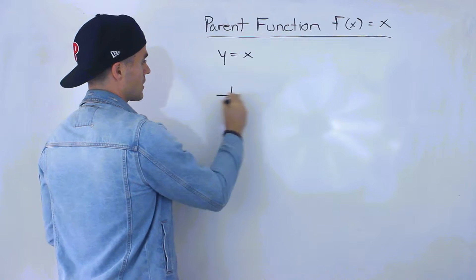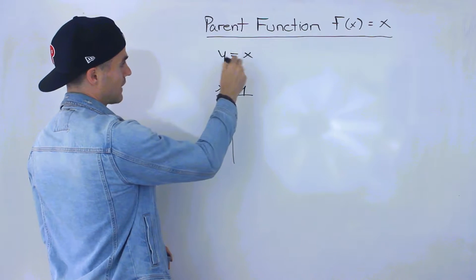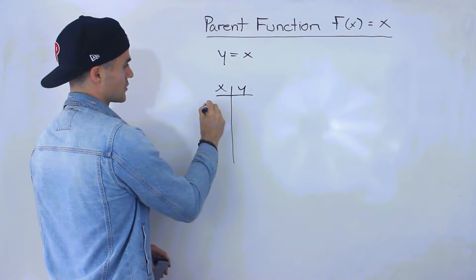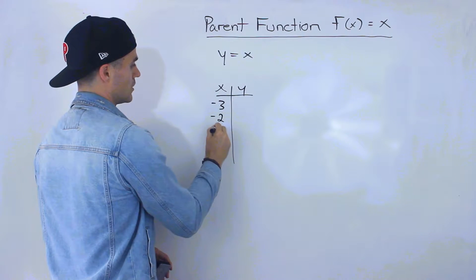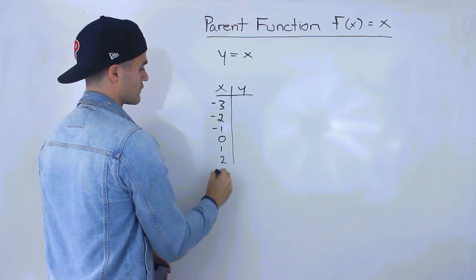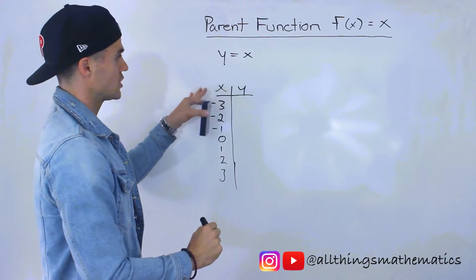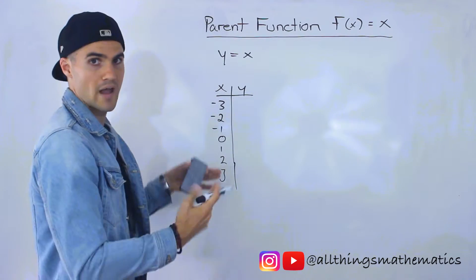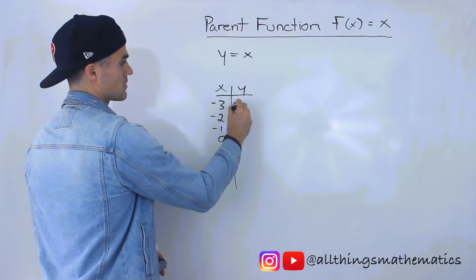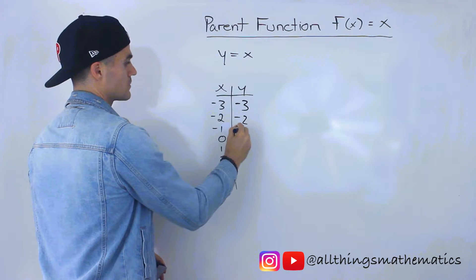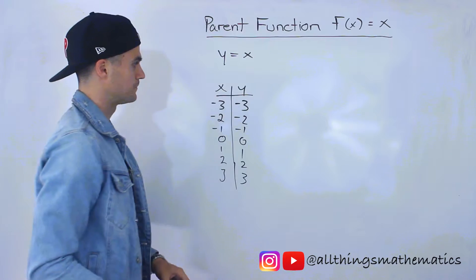To do a quick simple review, let's make a table of values for this function. We'll go from negative 3 to positive 3. Notice that with this function, the x and the y values are always going to be the same because y equals x. So the values are negative 3, negative 2, negative 1, 0, 1, 2, 3.